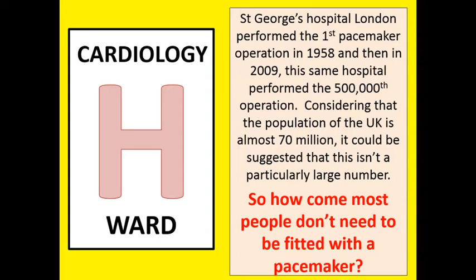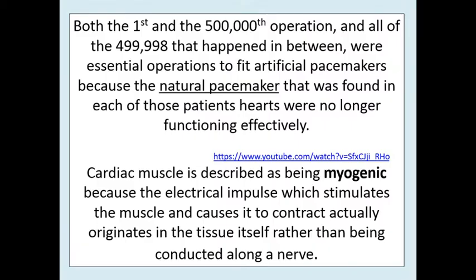Between 1958 — the very first pacemaker operation — and 2009, St. George's Hospital in London has performed 500,000 operations. With a population of 70 million, that's quite a low number over 51 years. Why don't most people need a pacemaker? Why is yours keeping pace? Because all 500,000 of those operations were because the natural pacemaker was no longer functioning. We all have a natural pacemaker.